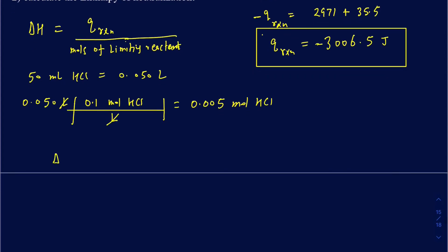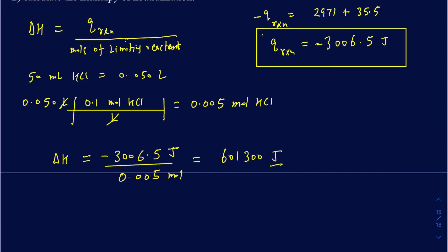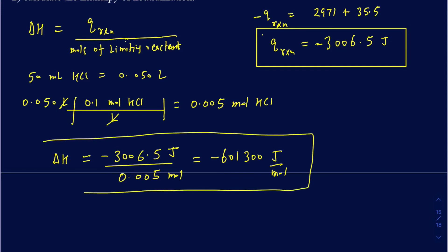Calculating delta H: Q of the reaction divided by moles of limiting reactant equals negative 3,006.5 divided by 0.005 moles, which comes out to negative 601,300 joules per mole. The negative sign confirms it's an exothermic reaction. That's how you calculate delta H for neutralization reactions.